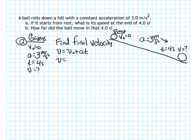So the final velocity is equal to the initial velocity, which is 0, plus at. So that's going to be 3 meters per second squared times the time of 4 seconds. So the final velocity is pretty easy. It's 3 times 4, which is 12 meters per second.